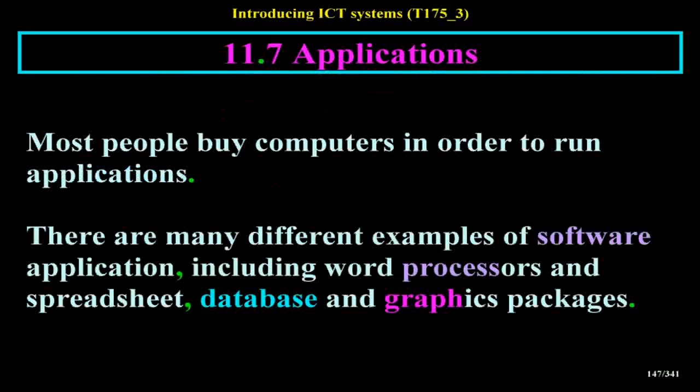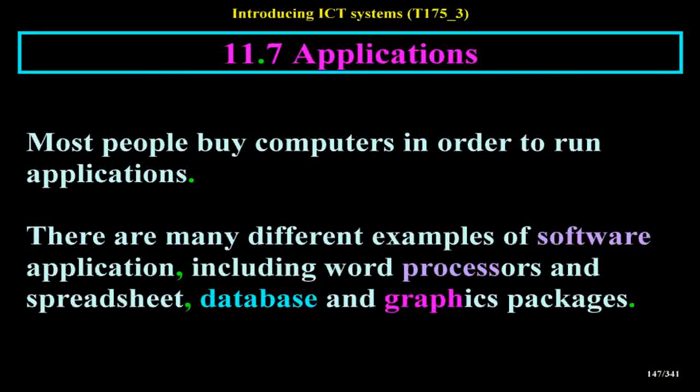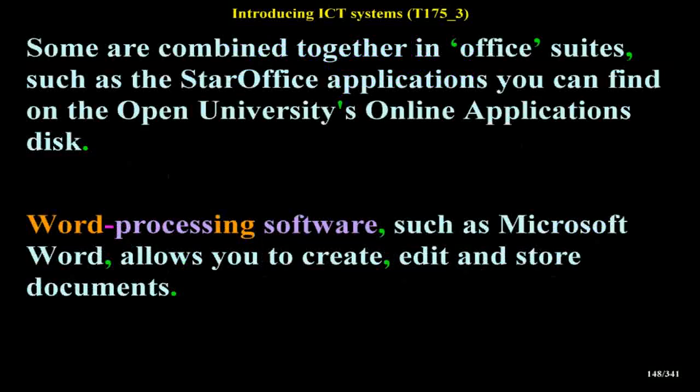Most people buy computers in order to run applications. There are many different examples of software applications, including word processors, spreadsheets, database and graphics packages. Some are combined together in office suites, such as the StarOffice applications available on the Open University's Online Applications disk.